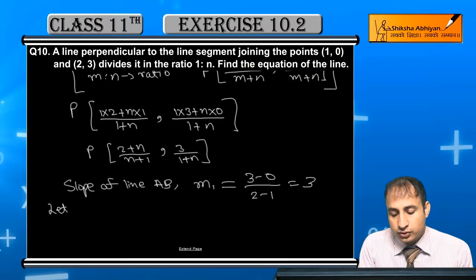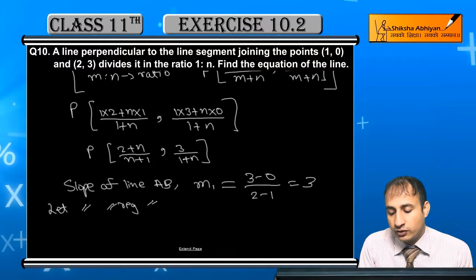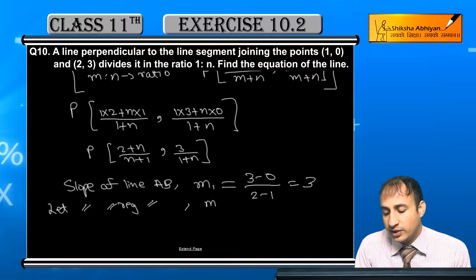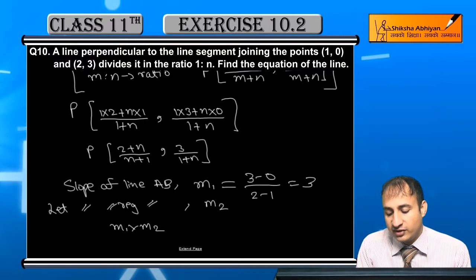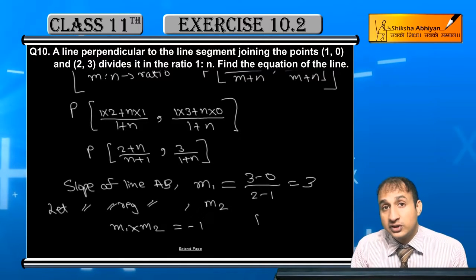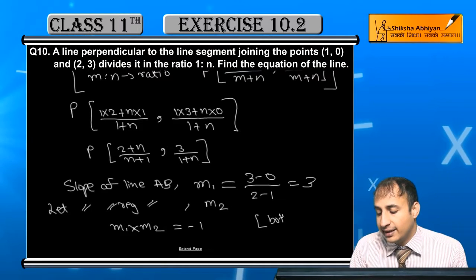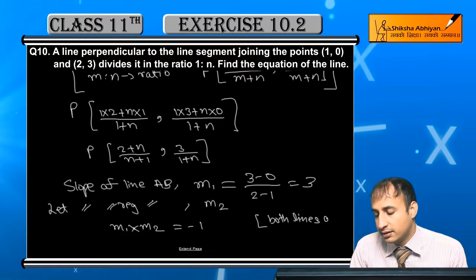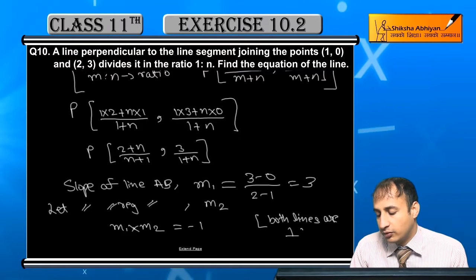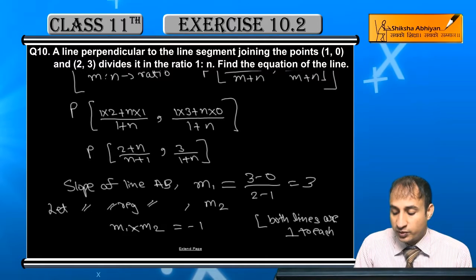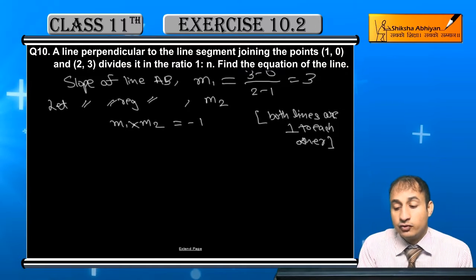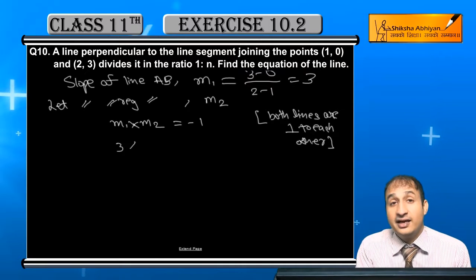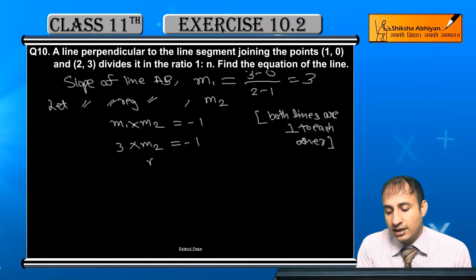Let slope of required line be M2. Therefore M1 into M2 is equal to minus 1 since both lines are perpendicular to each other. M1 is 3, so M2 is equal to minus 1/3.